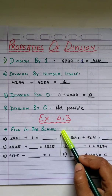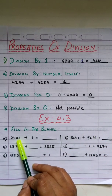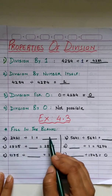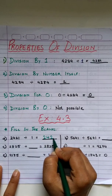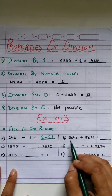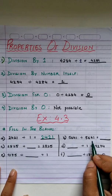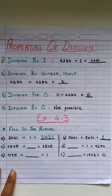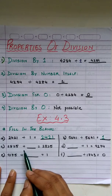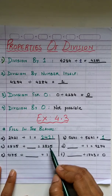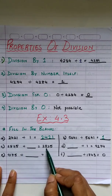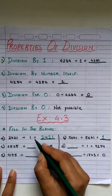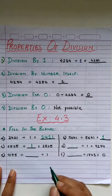The heading is fill in the blanks. First: 2,421 divided by 1. As we know, any number divided by 1 gives the number itself, which is 2,421. Next: 5,641 divided by 5,641. When divisor and dividend are the same, the answer is always 1. Next: 2,825 divided by blank gives 2,825. When the dividend and quotient are same, the divisor is 1.